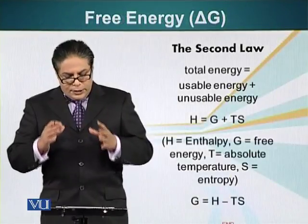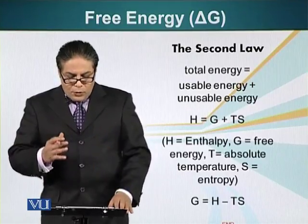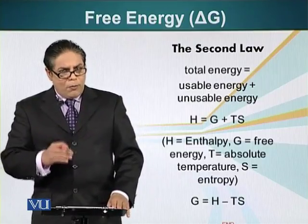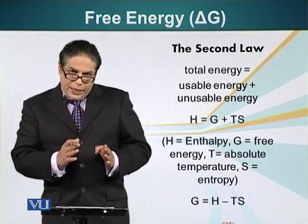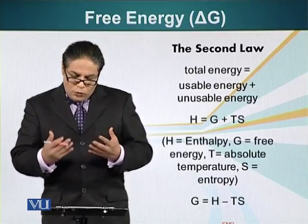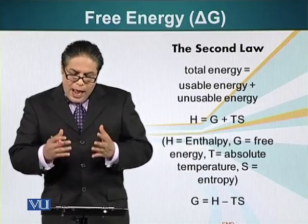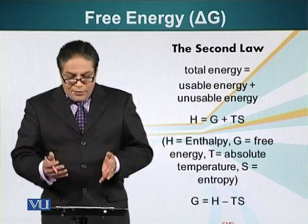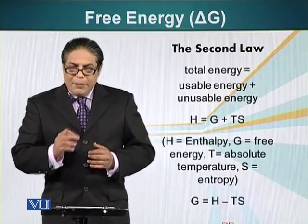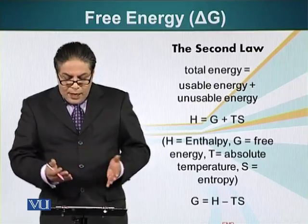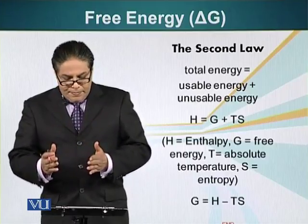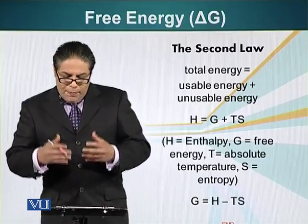Using the second law, we can write the equation: total energy equals usable energy plus unusable energy. In equation form, this becomes H equals G plus TS, where H represents the total energy, G is the energy that can be used to do useful work, S is the unusable energy or entropy, and T is absolute temperature. So the total energy of the system, represented by H, equals usable energy G plus the product of absolute temperature T and entropy S.